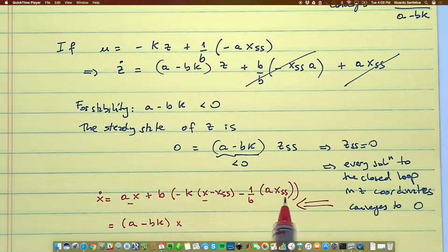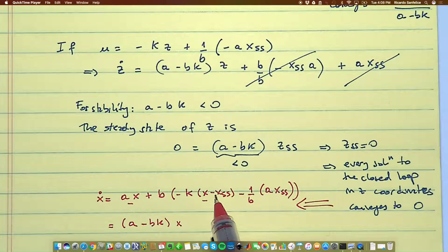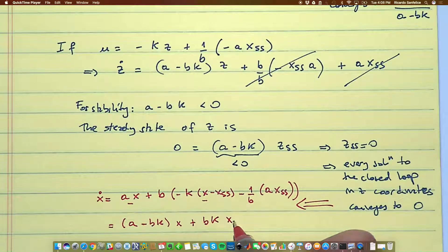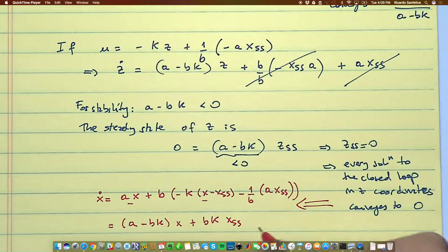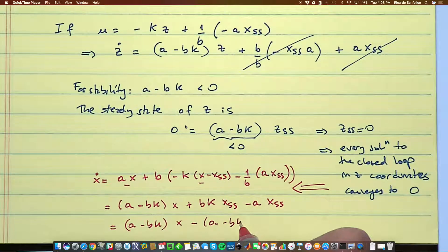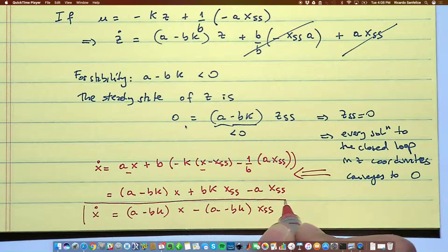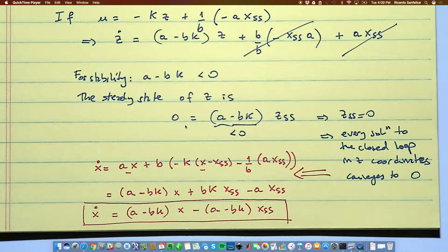Okay. Let's go. I think this is the right feedback. So this is this guy and this guy. And then the next term is plus b minus k minus, so this is plus b k x_ss. And then the last one is b divided by b is 1 minus a x_ss. And then we group this again and then we get a minus b k x minus a minus b k x_ss. So this is the closed loop system in the x coordinates. So what is the steady state of x? It's x_ss.